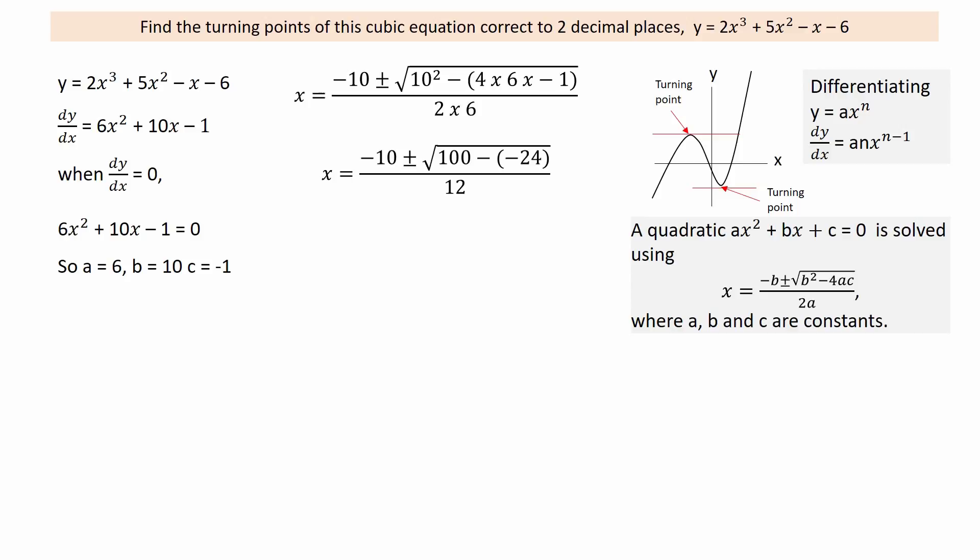Evaluating the bracket gives minus 24. Now multiply this bracket by minus 1 to give 24. Adding gives the square root of 124.